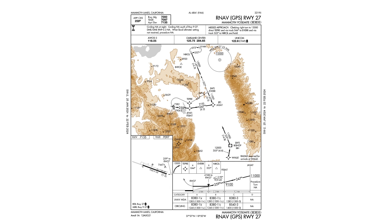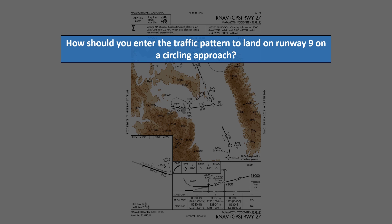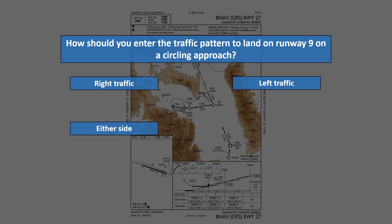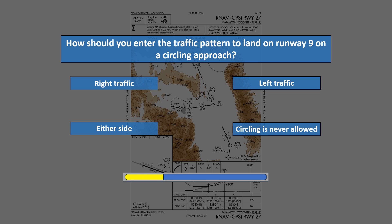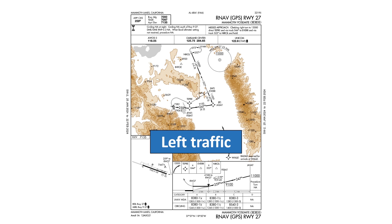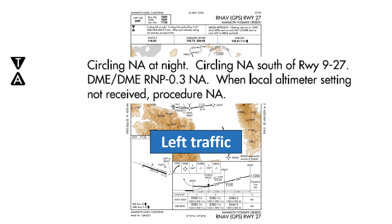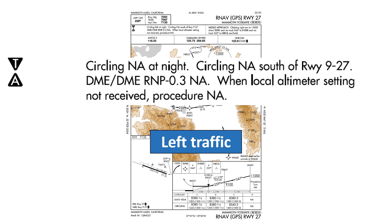For question three, let's say we're planning a circle to land. How should you enter the traffic pattern to land on runway nine? Make right traffic, left traffic, use either side of the runway, or is circling never allowed? We need to make left traffic to land on runway nine. The notes state that circling south of the runway is not allowed — that would be right-hand traffic — so we stay to the north, making left traffic. Circling is allowed on this approach, but not at night.